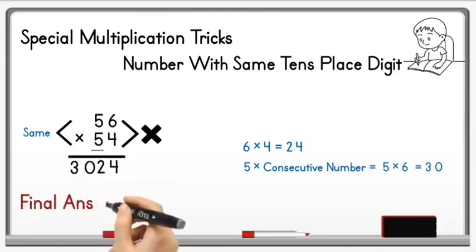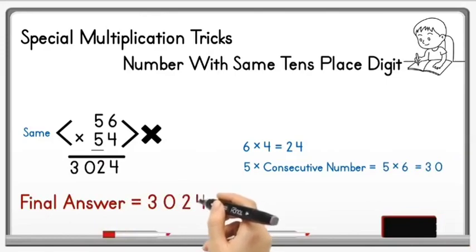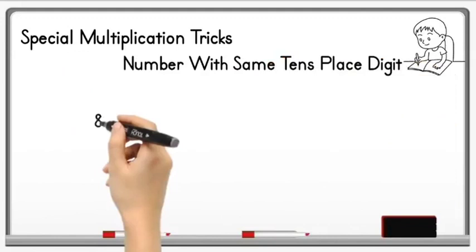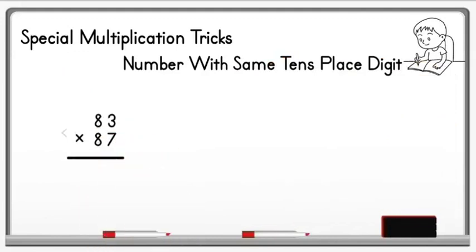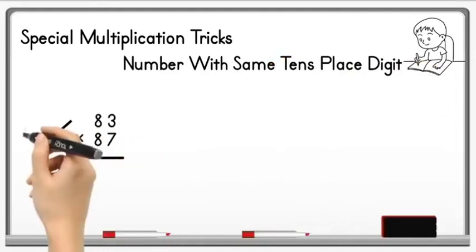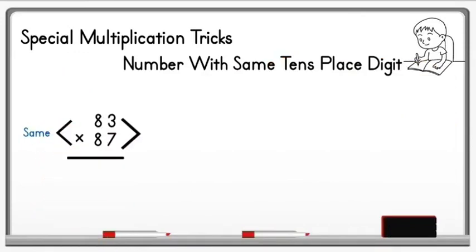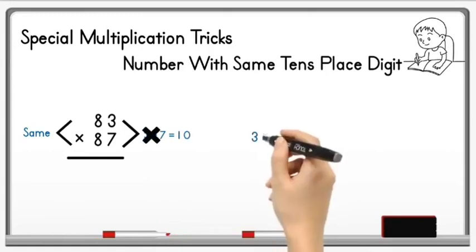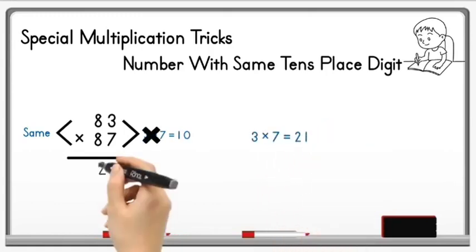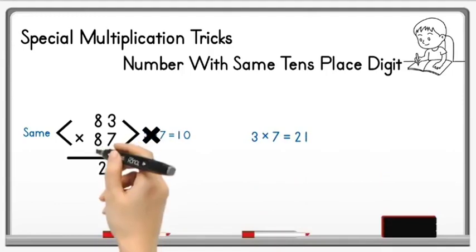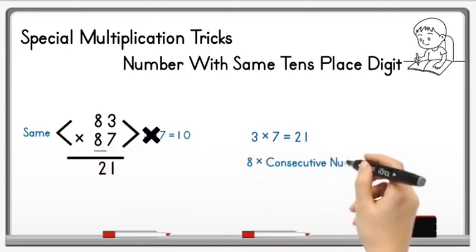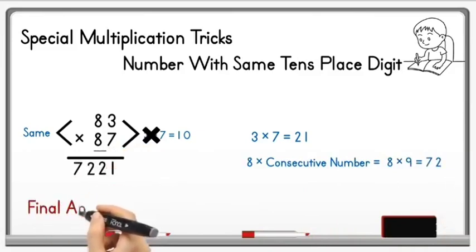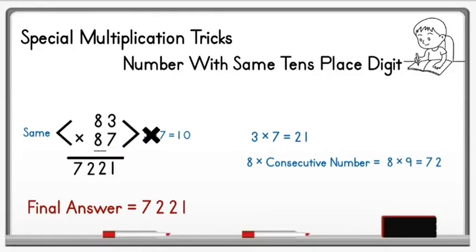Let's take one more example: 83 multiplied by 87. The tens digit of both numbers is the same — 8 — and the sum of the unit digits is 10, since 3 plus 7 equals 10. Multiply 3 by 7: 3 × 7 = 21; write 21 in the answer. Then multiply 8 by its consecutive number 9: 8 × 9 = 72. Write 72 before 21, giving the final answer 7221, found within a few seconds.